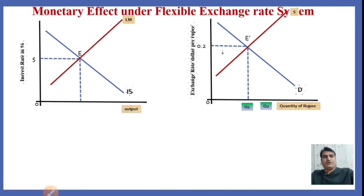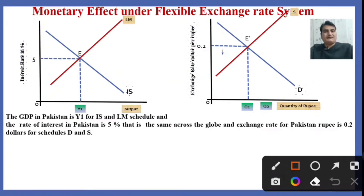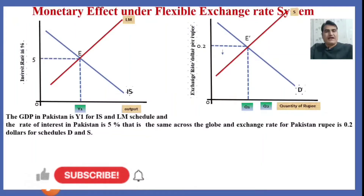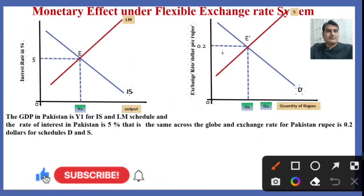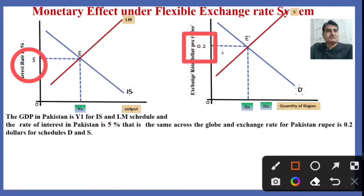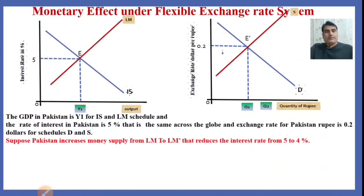It means 0.2 dollars can buy 1 rupee. Suppose the GDP in Pakistan is Y1 for the ISLM schedule. The rate of interest in Pakistan is 5%, which is the same across the globe, and the exchange rate for the Pakistan rupee is 0.2 dollars per the schedule D and S.